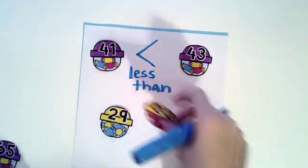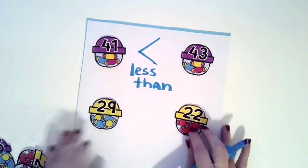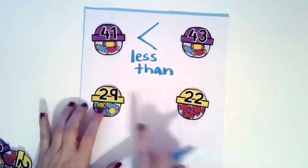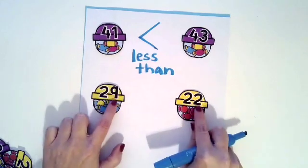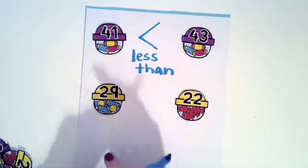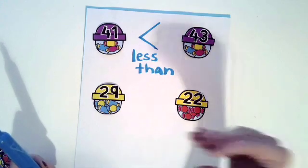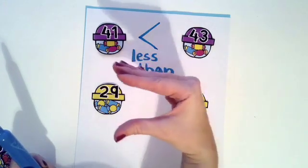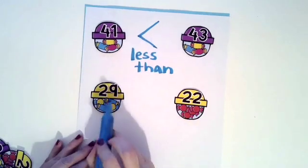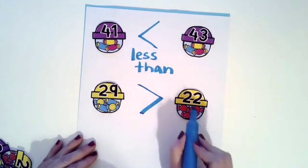All right. 29, 22. Again, the same number of tens. So we have to look at the ones place. Is nine greater than two or less than two? Show me with your claw. Does the claw want to grab 29? Or is it going to say, uh-uh? 29 is greater than 22.